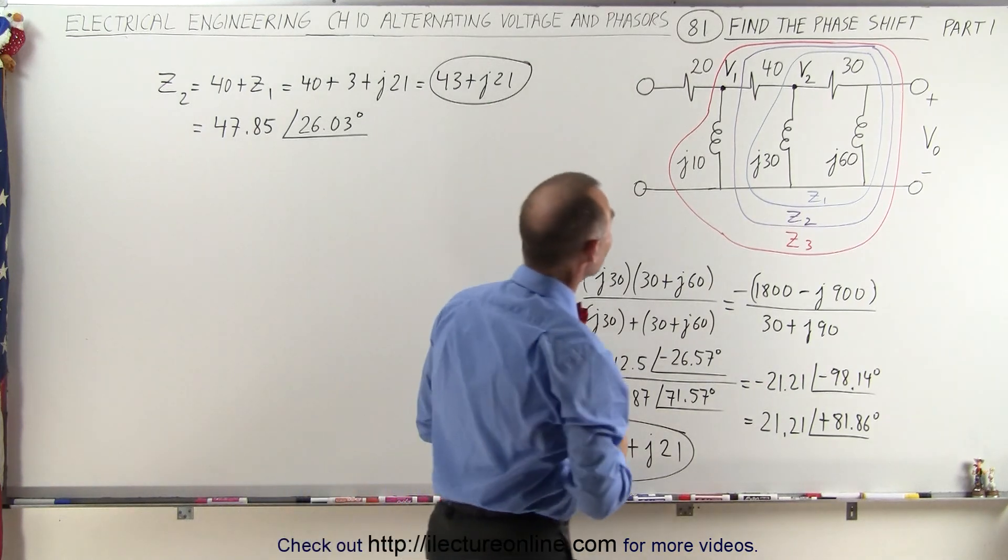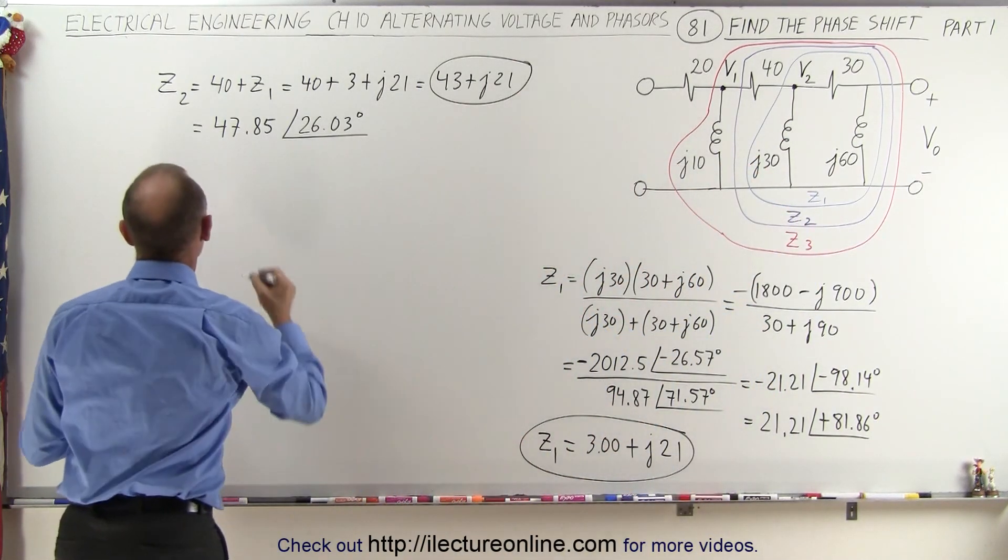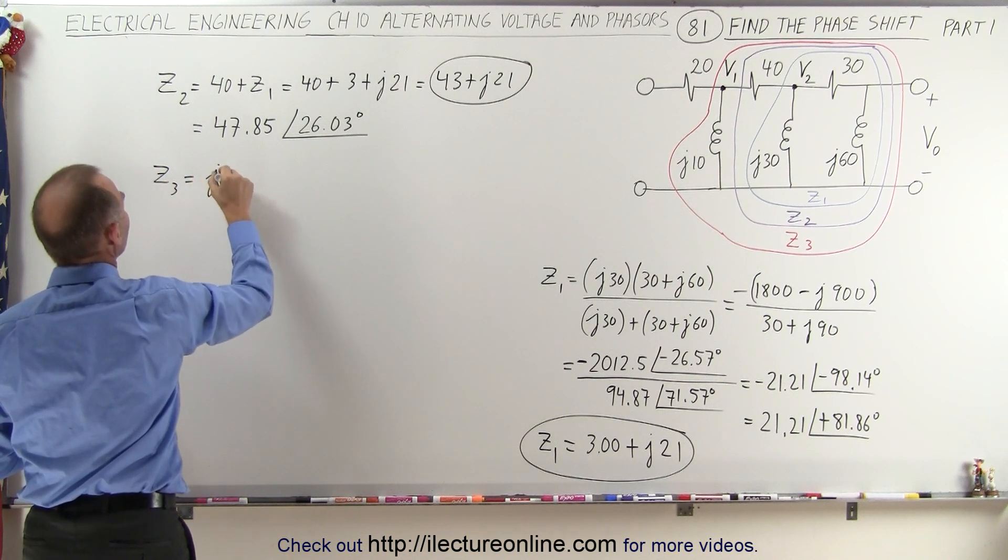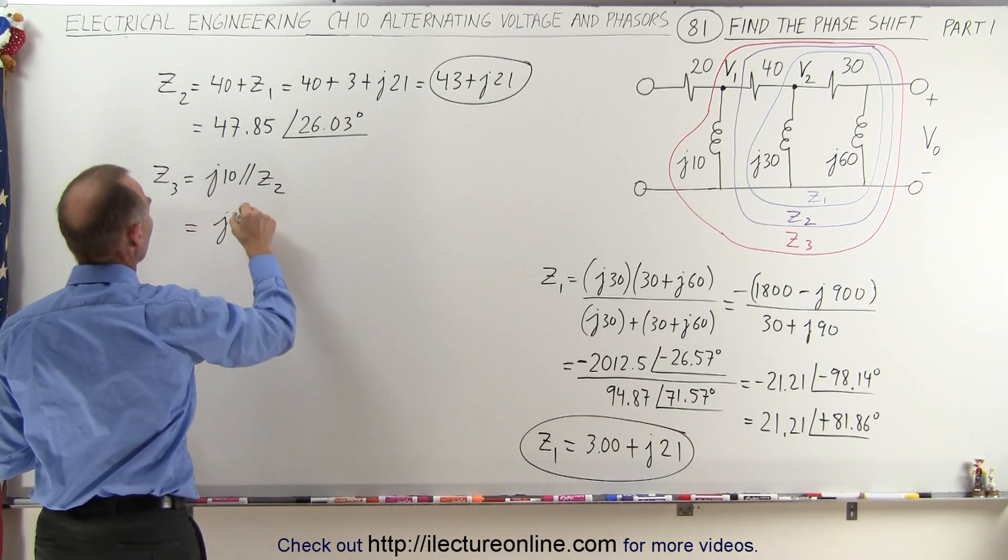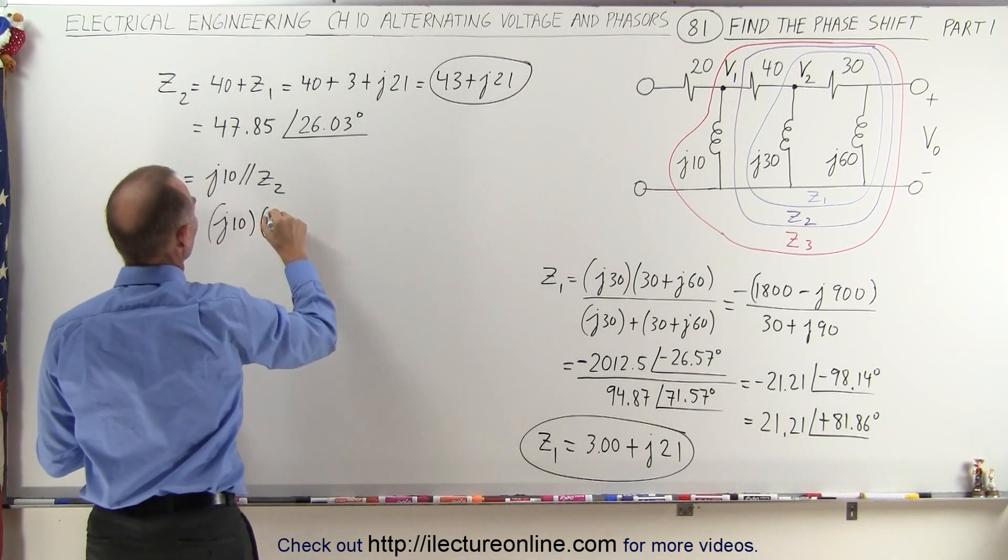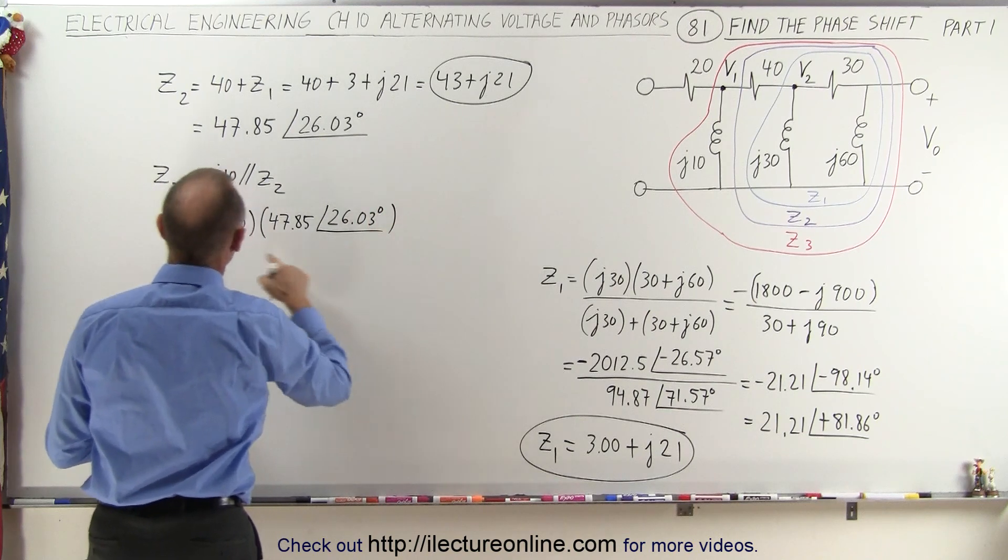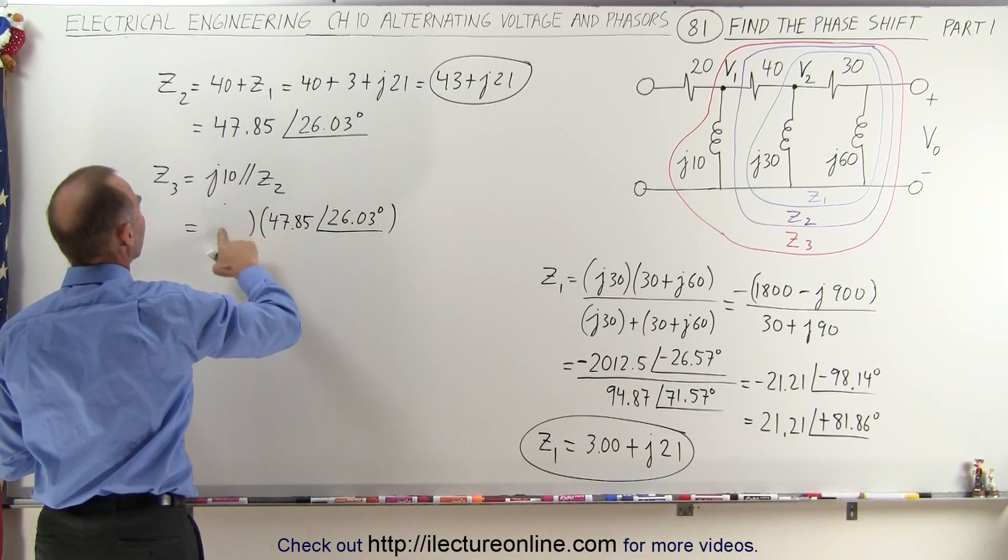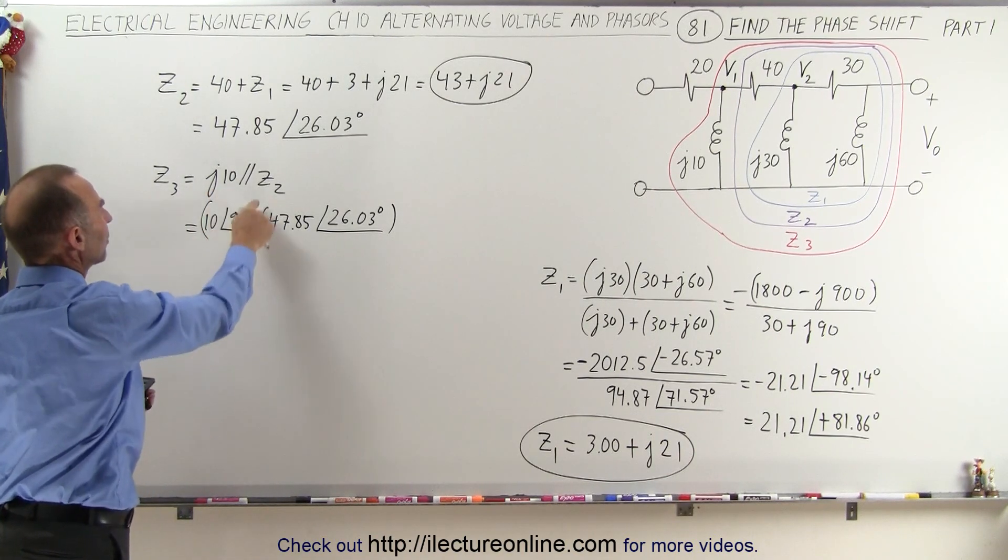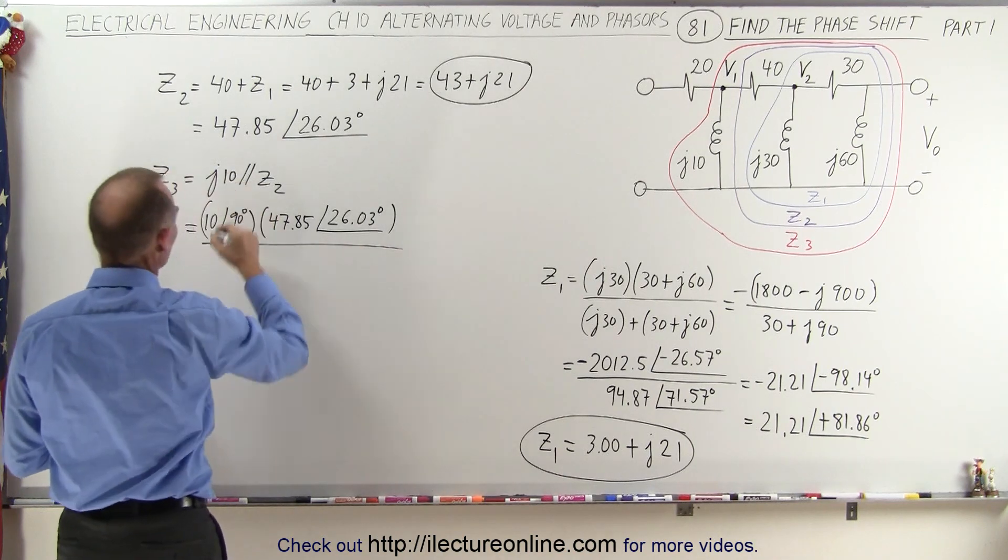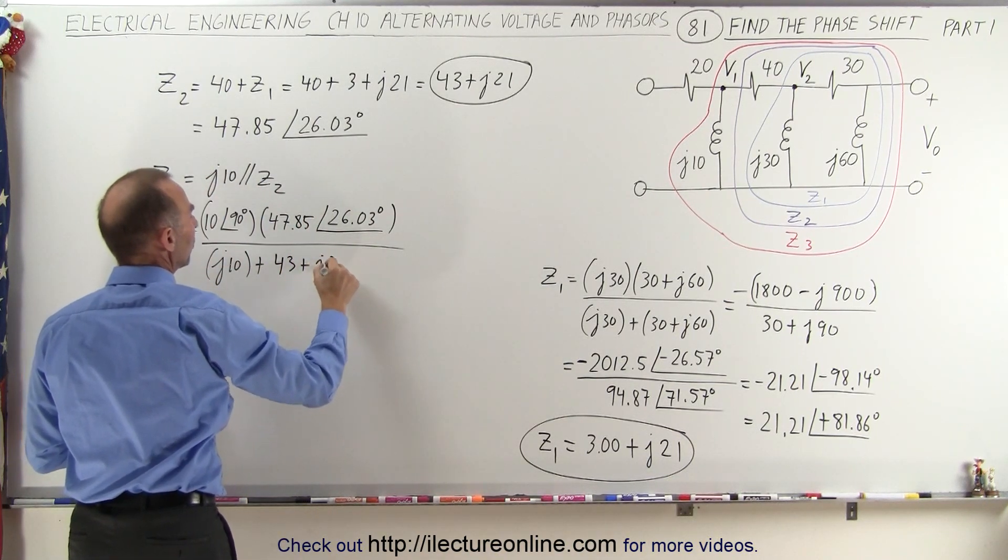So now we're ready to calculate Z3. To calculate Z3, we have to take Z2 in parallel with J10, so to get Z3, that's equal to J10 in parallel with Z2, that's the product over the sum method, so that will be J10 multiplied times Z2, which is 47.85 with a phase angle of 26.03 degrees. Actually, instead of writing it as J10, what I could have done, I could have said that's equal to 10 with an angle of 90 degrees. So let's go ahead and do that. So J10 is 10 with an angle of 90 degrees times Z2, so we have the product over the sum, and the sum would be J10 added to Z2 in this format, which is 43 plus J21.